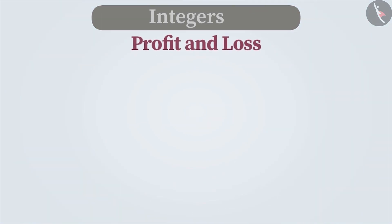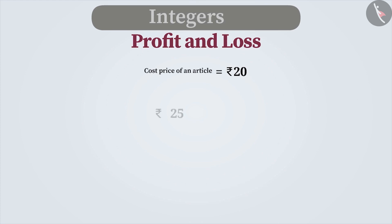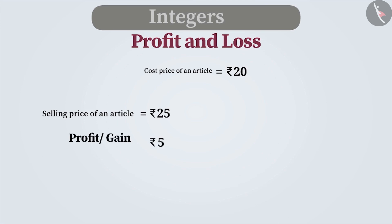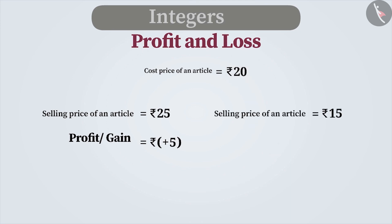While we are discussing money, let's also talk about profit and loss. Suppose a businessman sells an article worth Rs. 20 for Rs. 25. His profit is Rs. 5, which is represented as plus 5. But if he sells an article worth Rs. 20 for Rs. 15, he incurs a loss of Rs. 5, which is represented as minus 5.